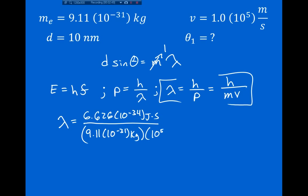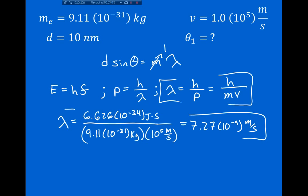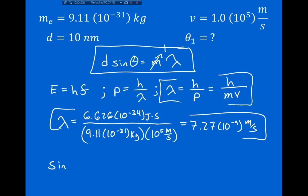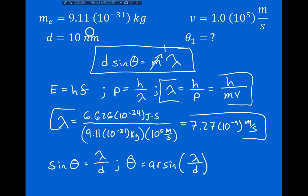The velocity is 10⁵ m/s. Plugging these numbers in, the de Broglie wavelength equals 7.27 × 10⁻⁹ meters. Now that we know the wavelength, we can plug this into the double-slit formula. Rewriting: sinθ = λ/d, so θ = arcsin(λ/d). With the de Broglie wavelength and d = 10 nm = 10 × 10⁻⁹ m, we get θ = 46.7 degrees. That is the angle at which first-order constructive interference occurs when we direct electrons at the double slits.